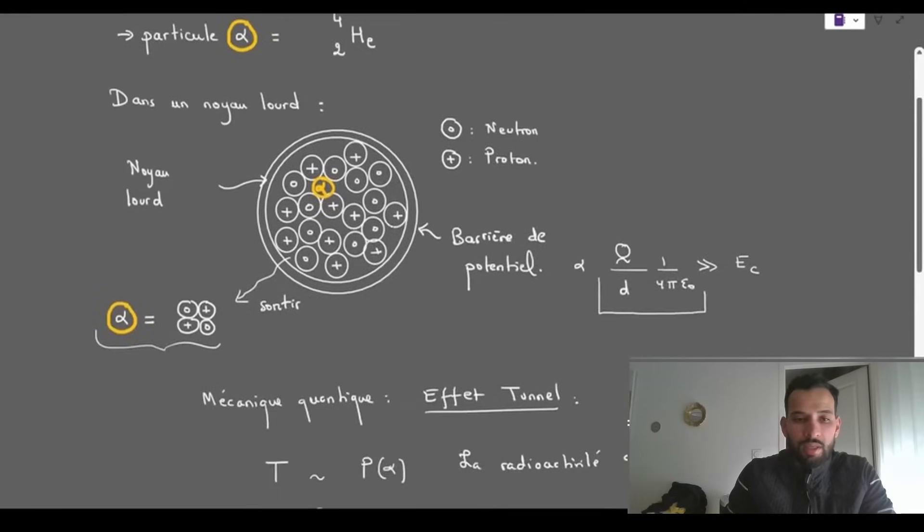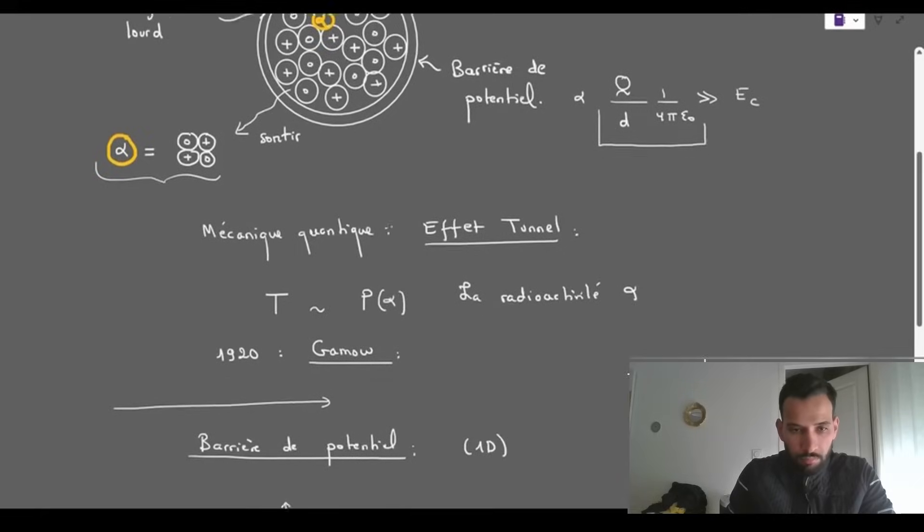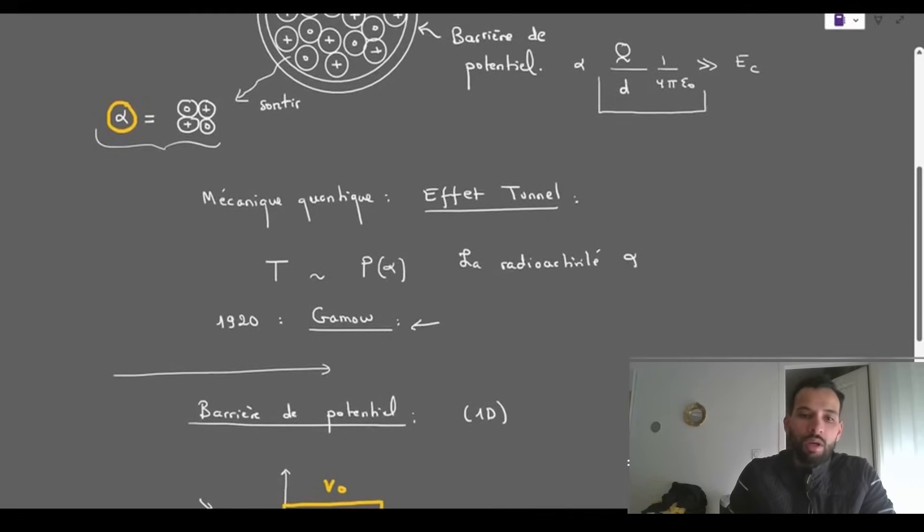The quantum interpretation of radioactivity was proposed in 1920 by George Gamow. He notably calculated the transmission coefficient, that is to say, the probability that an alpha particle passes through the potential barrier and is emitted.